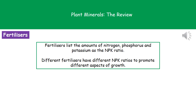Finally, we need to consider fertilisers. Chemically produced fertilisers list the amounts of nitrogen, phosphorus, and potassium as what's called the NPK ratio. If you're given NPK and asked what one of those letters stands for, remember they are the chemical symbols — you can look them up on the periodic table at the back of your exam paper. Different fertilisers have different NPK ratios because we won't always need the same minerals in the same amount. By selecting the right NPK ratio, we can promote the specific aspect of growth we want — for example, one fertiliser for fruit growth and a different one if we want the plant to grow taller.